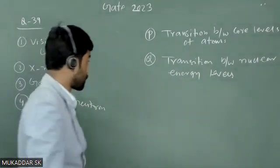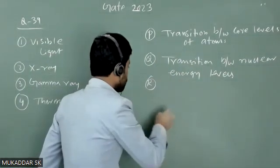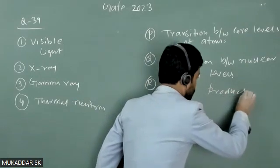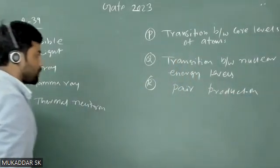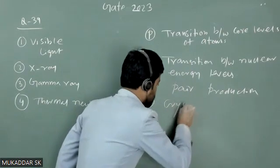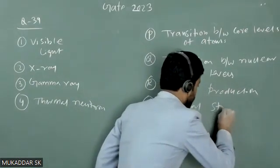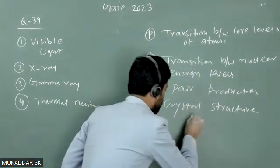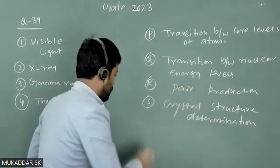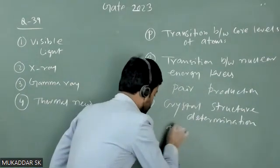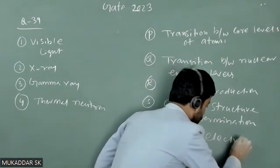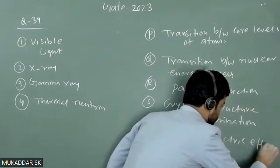Then R is given as pair production, S is given as crystal structure determination, and T is given as photoelectric effect.